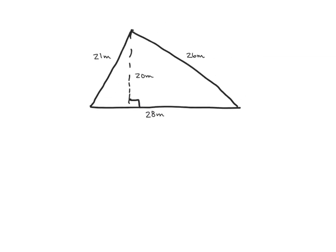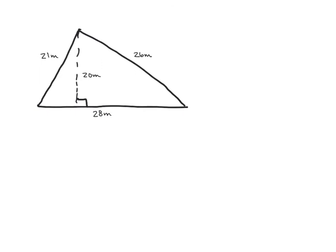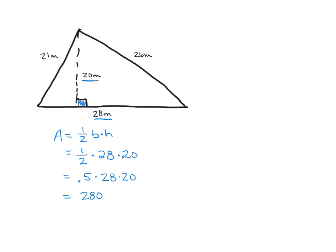Let's try one more triangle — this one has lots of numbers. We want the ones that meet at the right angle, so we'll work with 20 and 28. Our formula is A equals one-half times B times H. Plugging in: one-half times 28 times 20, or 0.5 times 28 times 20, which gives us 280 meters squared.